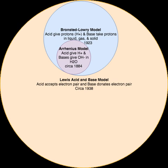The ECW model is a quantitative model that describes and predicts the strength of Lewis acid-base interactions (−ΔH). The model assigns E and C parameters to many Lewis acids and bases. Each acid is characterized by an EA and CA; each base is likewise characterized by its own EB and CB. The E and C parameters refer, respectively, to the electrostatic and covalent contributions to the strength of the bonds that the acid and base will form. The equation is: −ΔH = EAEB + CACB + W, where the W term represents a constant energy contribution for acid-base reactions such as the cleavage of a dimeric acid or base. The equation predicts reversal of acid and base strengths, and graphical presentations show that there is no single order of Lewis base or acid strengths.